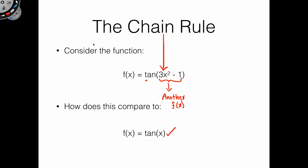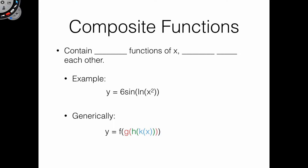So let's talk about composite functions. Composite functions contain multiple functions of x embedded into each other. For example, consider the function y equals 6 sine of natural log of x squared. That is of the form f of g of h of k of x. In other words, instead of just plugging x into f of x, you're plugging g of h of k of x into that — basically like plugging 3x into your function instead of x. That's the idea.